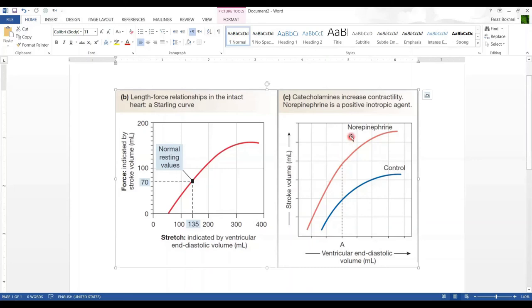Look at point A - the EDV is constant at this point. But look where it plots on the blue curve versus the red curve. It corresponds to a much higher force or stroke volume than it achieves under normal control conditions.